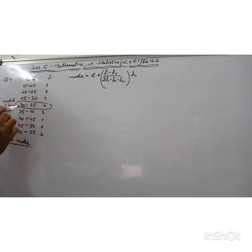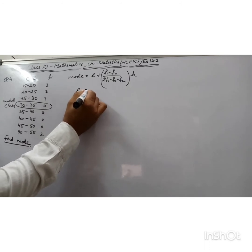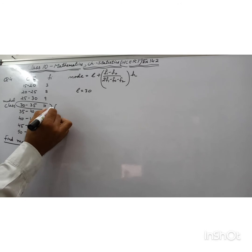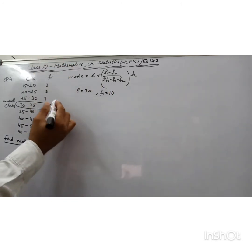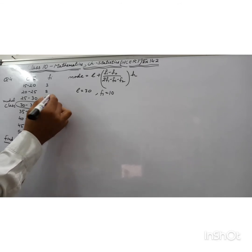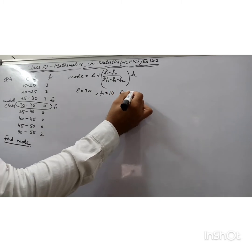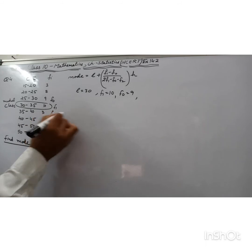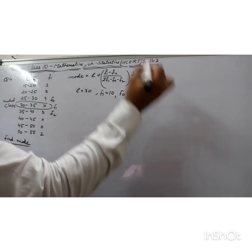The lower limit of modal class is 30, so L = 30. The frequency of modal class is f1 = 10. The frequency of the preceding class interval is f0 = 9, and the frequency of the succeeding class interval is f2 = 3.